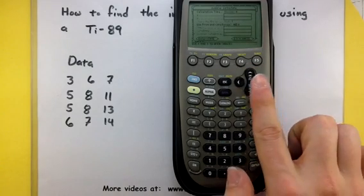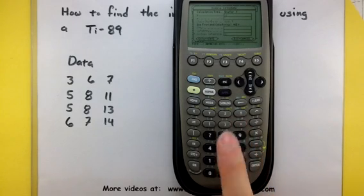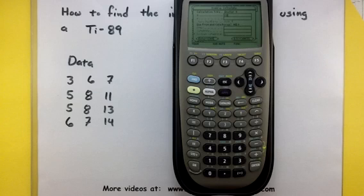Scroll down. And this is where we're going to tell the calculator what data to use. Remember, everything was stored in that list, C1. So we'll tell the calculator to look at C1. Perfect.